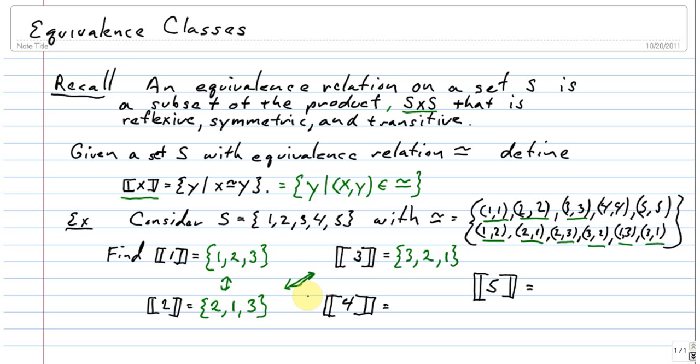Does it always come out the same set? Well, let's look at 4. 4 is related to 4. 4 is not related to anything else. So that set has a single element and it's easy to see that 5 is the same way.